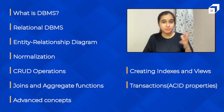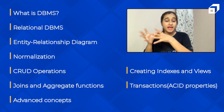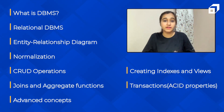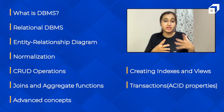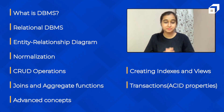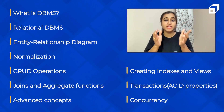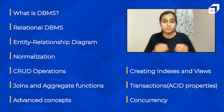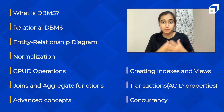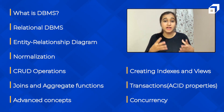Then, transactions and ACID properties, which is the most important topic in interviews. But how are ACID properties actually conserved in transactions? The different stages and the different levels of transactions — we will be covering all that. And how do people concurrently access the same database at the same time? How is this actually possible? What is concurrency, and how is it actually implemented?